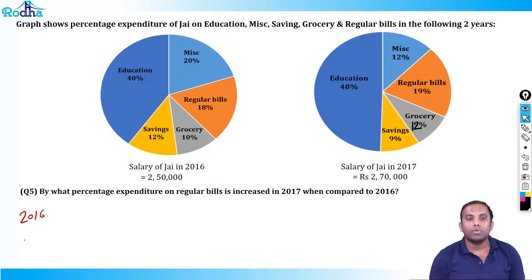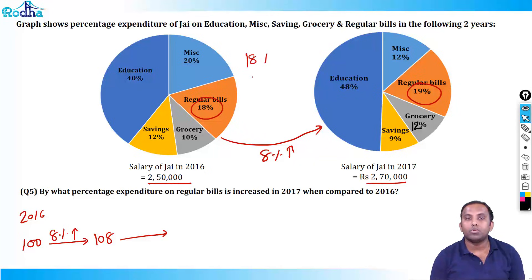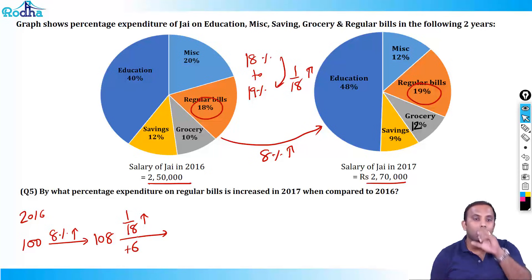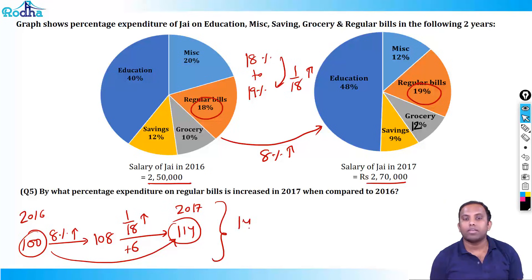Assume regular bills in 2016 to be 100 rupees. Pie chart value increased by 8% from 2,50,000 to 2,70,000, so regular bills should also increase by 8% — it becomes 108. Regular bills changed from 18% to 19%. What is the percentage change? 1 by 18 increase. 1/18 of 108 is 6. So 108 + 6 = 114. From 100 to 114, what is the percentage change? 14%. The answer is 14%.